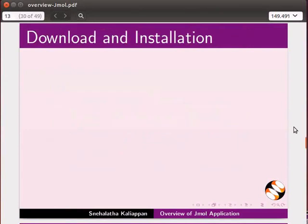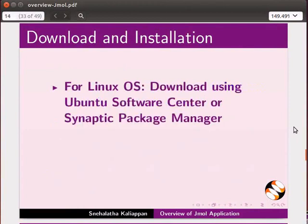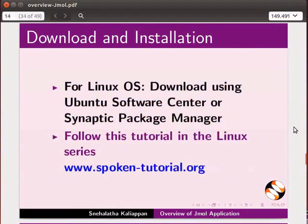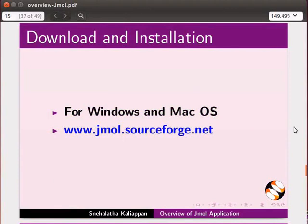Let us see how to download and install Jmall. Jmall can be installed on Windows, Mac operating system and on Linux systems. A special version of Jmall for Android devices is available at the link shown. For Linux operating systems, download using Ubuntu Software Center or Synaptic Package Manager. Follow the tutorial in the Linux series on our website. For Windows and Mac operating systems, open the given link in any web browser. I will open this link and quickly go through the contents given on the web page.